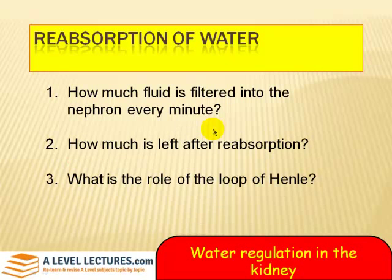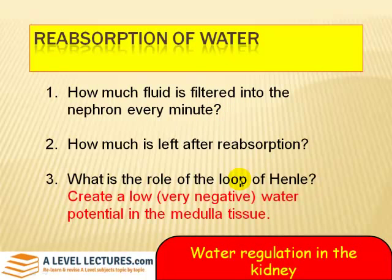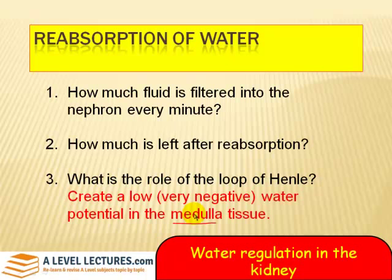Today we're particularly interested in the role of the loop of Henle. We're looking at reabsorption — it is creating a very negative water potential in the medulla tissue. Remember that pure water has a water potential of zero and everything else is negative by comparison. So if it's very negative, it means very low water content. By creating a low water content in the medulla tissue, you're trying to draw water out of the loop of Henle into the surrounding tissue. That's the whole point.